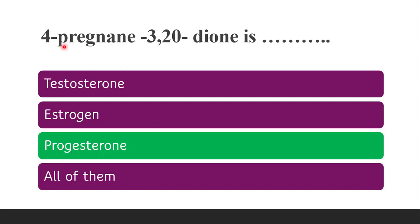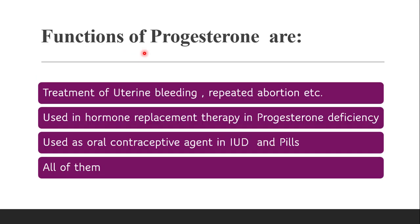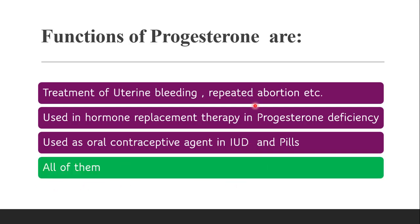Next question: functions of progesterone. Progesterone is a female sex hormone used for maintenance of pregnancy, while estrogen deals with regulation of the menstrual cycle. The uses of progesterone include treatment of uterine bleeding, repeated abortions, hormone replacement therapy in progesterone deficiency, and use as an oral contraceptive agent including intrauterine devices and contraceptive pills. The correct answer is all of them.